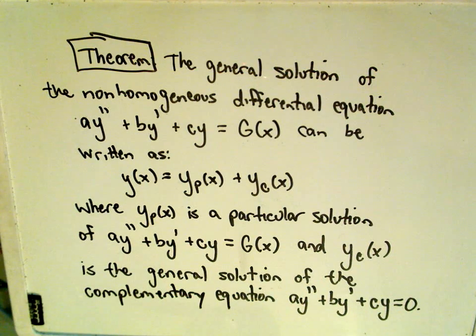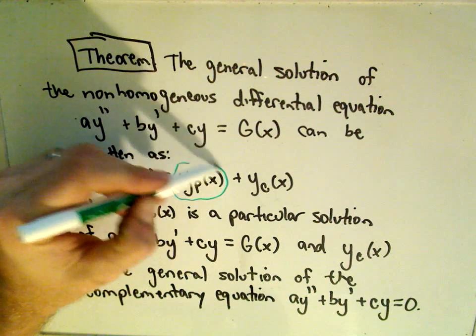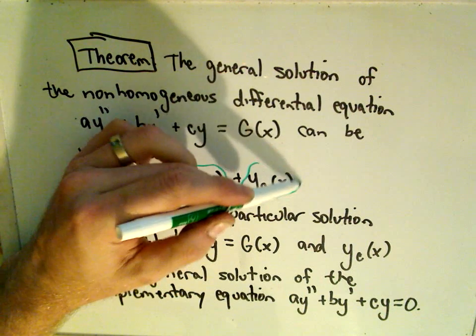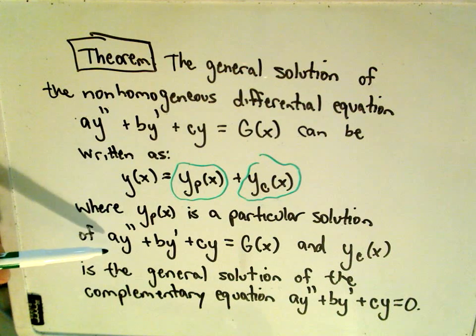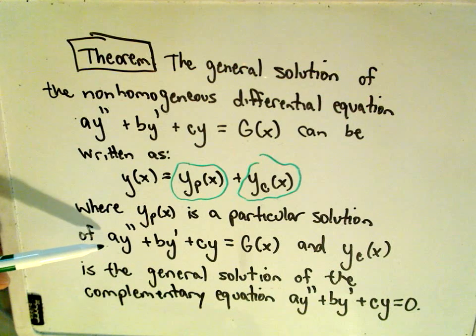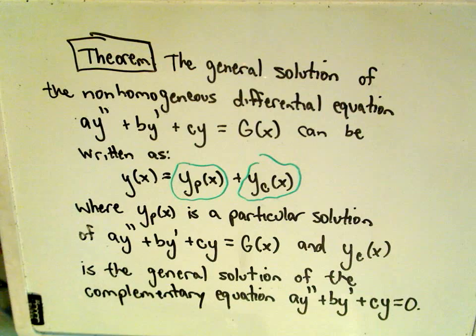It says you can look at what's called, so it says the solution is going to be what's called the particular solution, y of p, and also kind of what's called the general solution. So it says y of p is going to be a particular solution of this original equation we're trying to solve. And y of c is going to be a solution to the complementary equation that we're trying to solve.